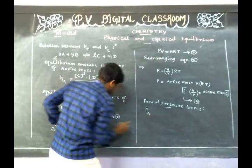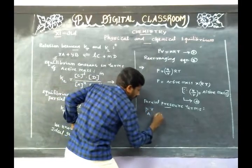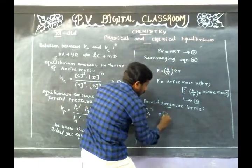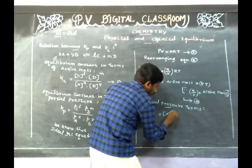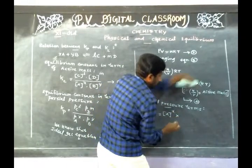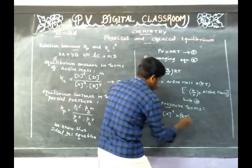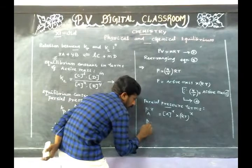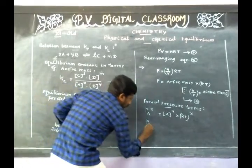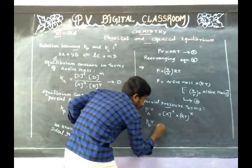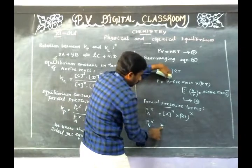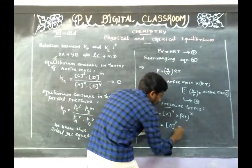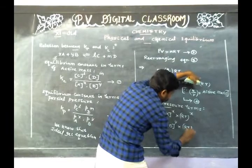Partial pressure of reactant A with stoichiometric coefficient X is equal to active mass of reactant A with stoichiometric coefficient X into RT, whole to the power X. Then partial pressure of reactant B with stoichiometric coefficient Y is equal to active mass of reactant B with stoichiometric coefficient Y into RT, whole to the power Y.